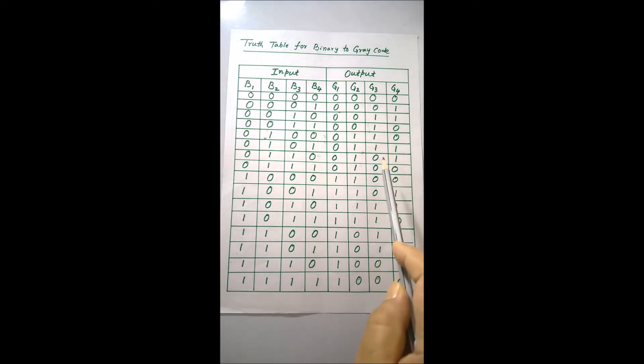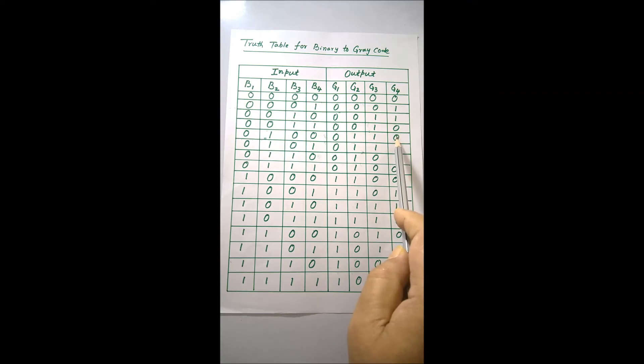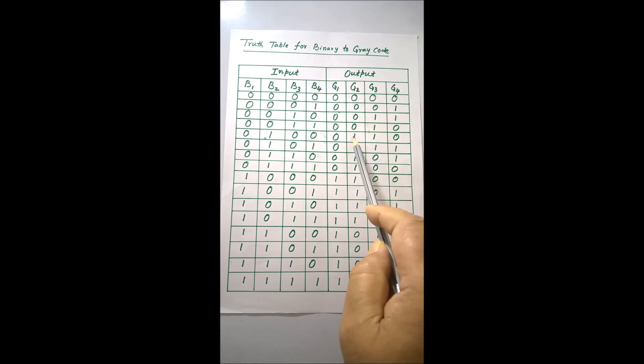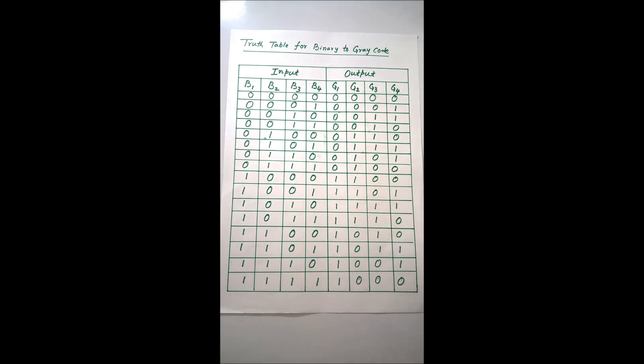In that way, you proceed. If you complement the least significant bit and get a number that is not already existing, it is accepted. If it is already an existing number, come to the next least significant bit. If still existing, come to the next, and so on. In this way, you can construct the whole table.